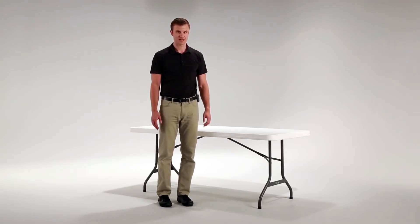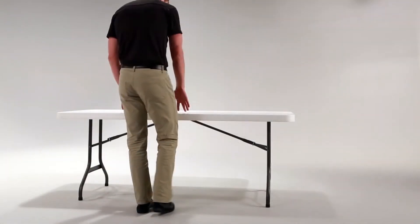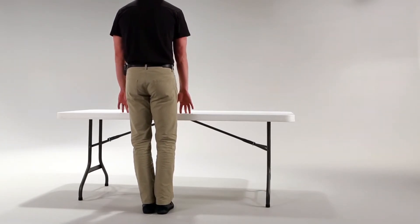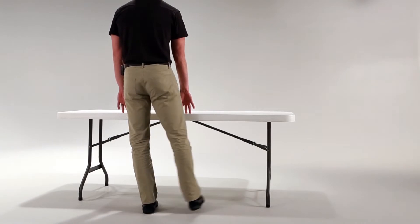To perform this exercise, you're going to face a countertop or another stable surface and then use your arms for support on that stable surface and lift your leg out to the side.